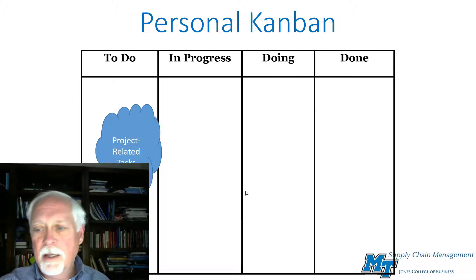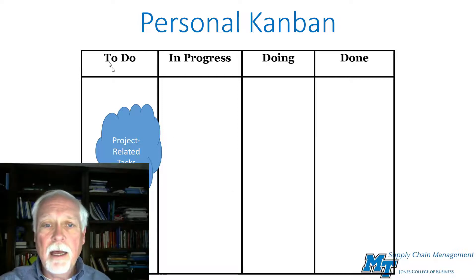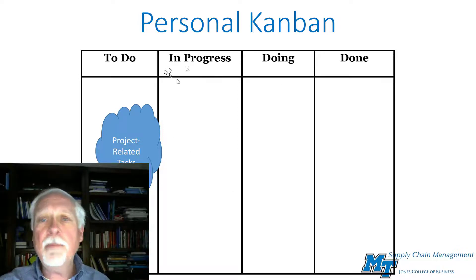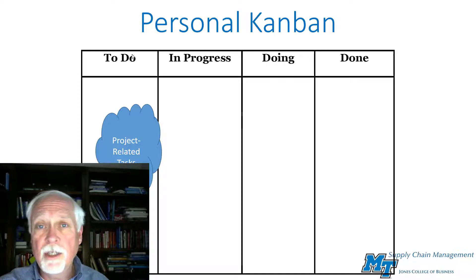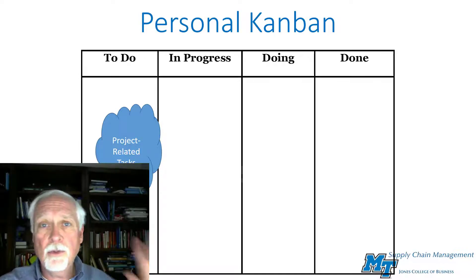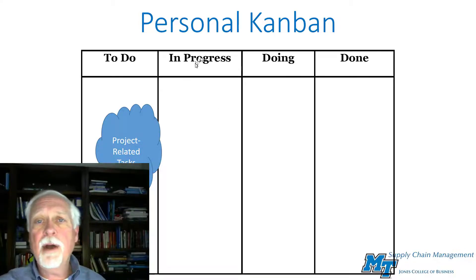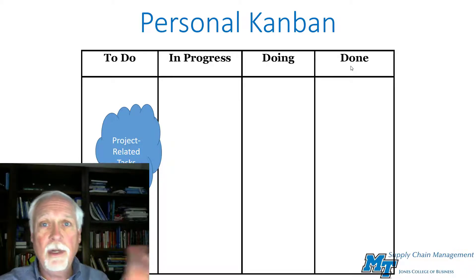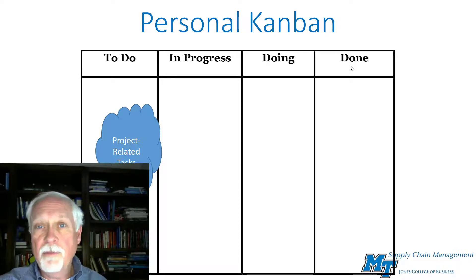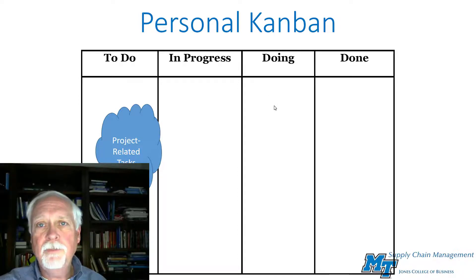The simplest Kanbans probably have three columns; I prefer to use four. They almost always have a to-do, where you capture tasks in your backlog, an in-progress, and then done. I'm a very strong believer that most people don't multitask — they try, but they really switch back and forth. If we can limit that switching, we're better off and more efficient. So I have added a doing column.